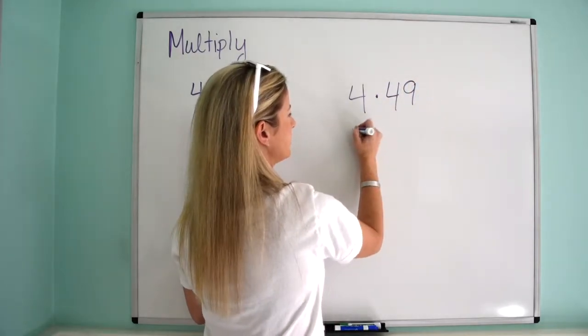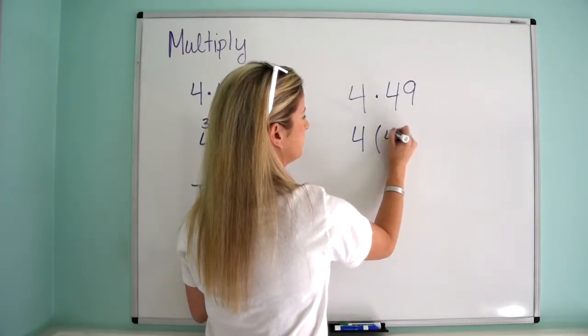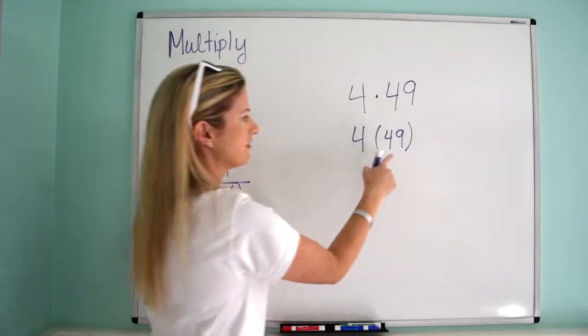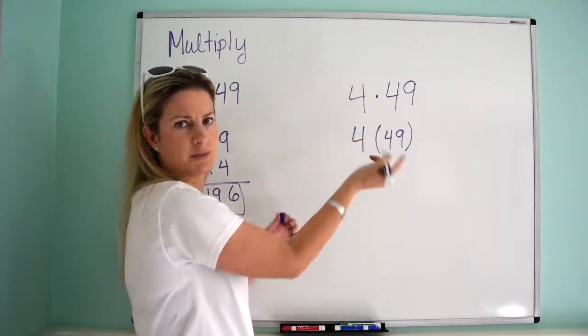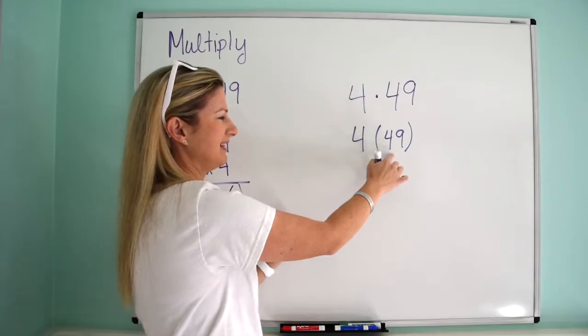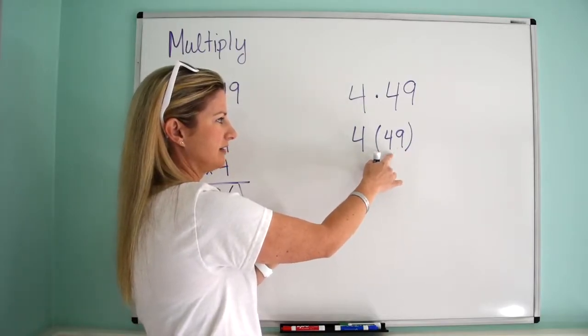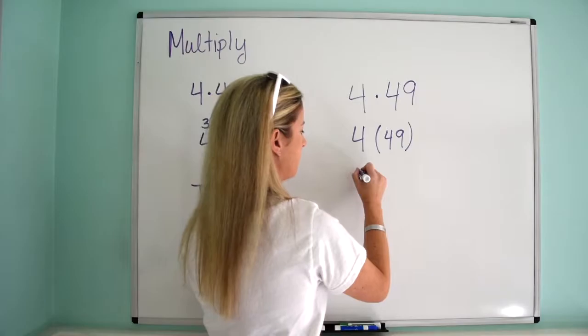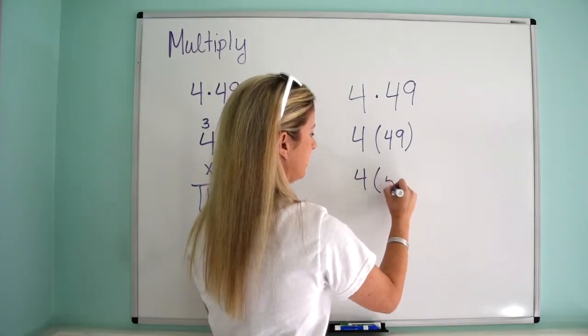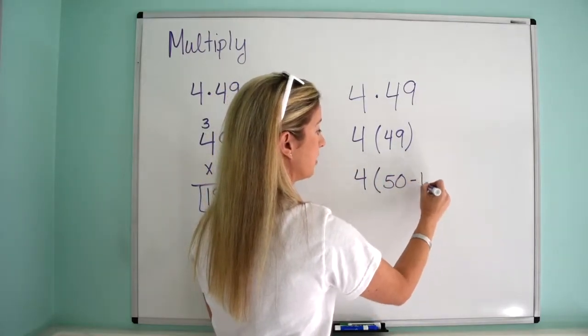Okay, we have 4 times 49. So now I'm just going to rewrite that as 4 parentheses 49, because when we have the parentheses here, it implies multiplication. And let's think about another way to write 49.